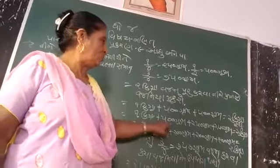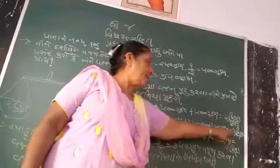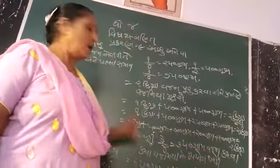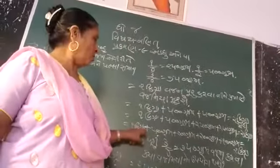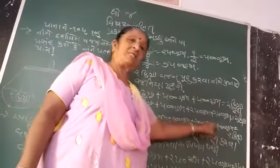1 kg plus 500 grams plus 800 grams. This is about 1 kg. It's about 3 grams. 1 kg plus 500 grams plus 200 grams plus 200 grams. At this point, take a hundred.